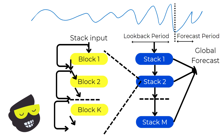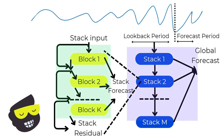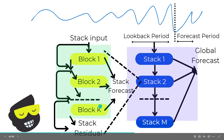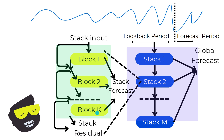By combining the residuals with the original input at each step, each block can build upon the corrections of the previous block, enhancing the overall forecast accuracy. This iterative refinement within each stack ensures that predictions become increasingly accurate as data passes through the blocks. After all the blocks within a stack have processed the data, the final residual from the last block — block K — is passed on to the next stack.